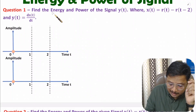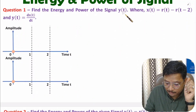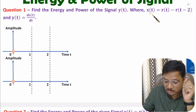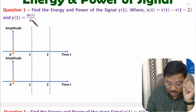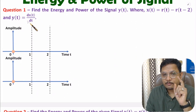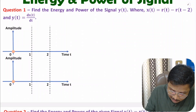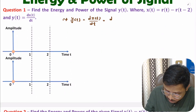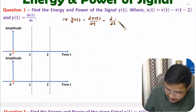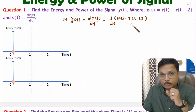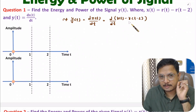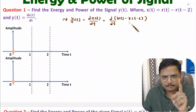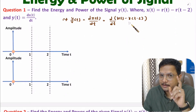In question one, we need to identify energy and power of y(t). Here x(t) is given based on the ramp signal, and y(t) is the differentiation of x(t) with respect to time. So first we need to identify y(t). Here y(t) is the differentiation of x(t) with respect to time, and x(t) is r(t) minus r(t-2). One should know that differentiation of a ramp signal is a step signal — I have explained this in properties of signals.